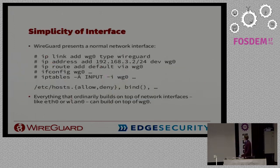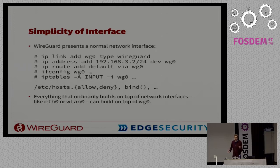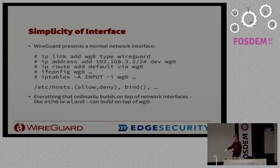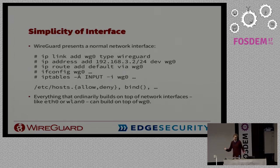It's also really simple to use. Rather than, say, the complicated IPsec XFRM system or OpenVPN daemons, with WireGuard you just get a normal network interface that you can administer using all the tools you already know — ip route, etc. To add a WireGuard interface: ip link add, just like with any other virtual interface. To set the address, ip address or ifconfig. Routing is the same way, and you can use iptables. You can even use /etc/hosts for host-based authentication. Because with WireGuard, you just have the interface — a simple, fundamental concept that lets you use all the things you already know.